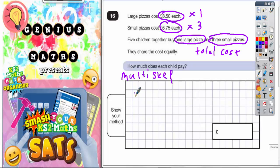Obviously our one large pizza is just one lot of £8.50, so that's literally £8.50. But we've got three lots of £6.75. So three small is going to be £6.75 times three. Let's work that out.